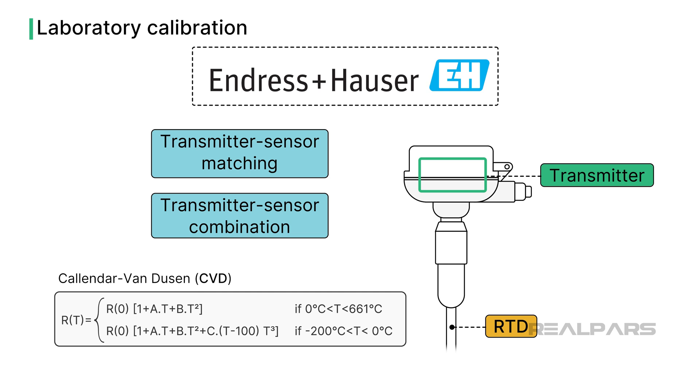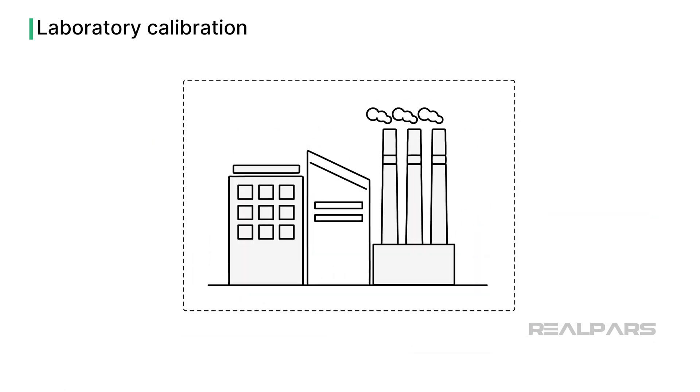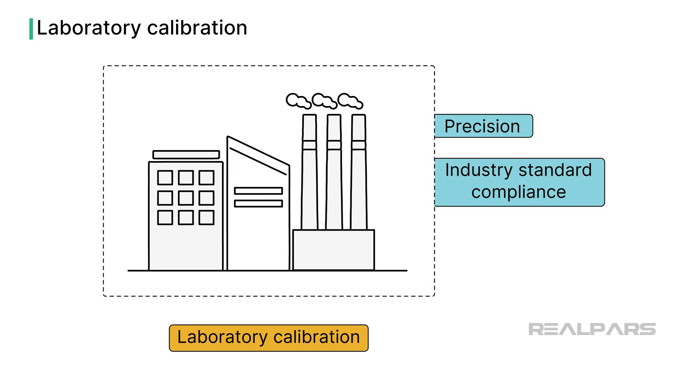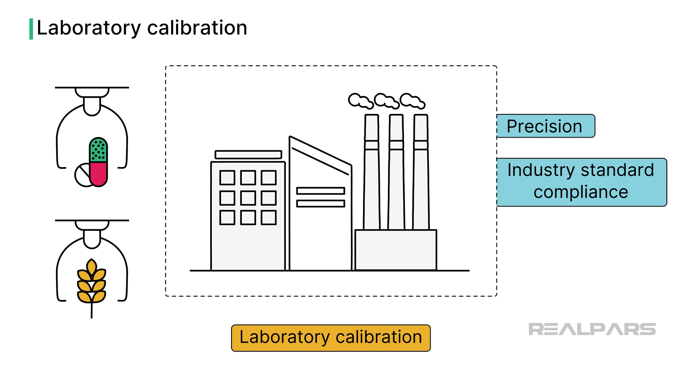That's one example where lab calibration is performed. There are several reasons for lab calibration, but two important ones are precision and industry standard compliance. Precision is a must in critical applications like pharmaceutical manufacturing and food processing.